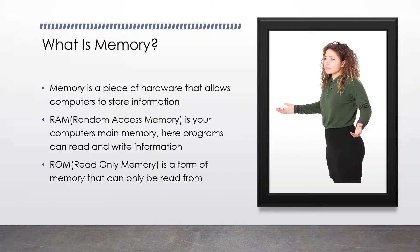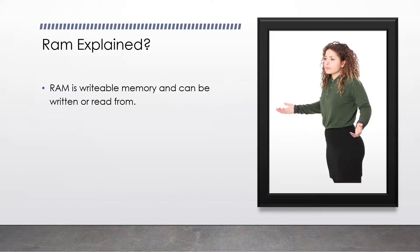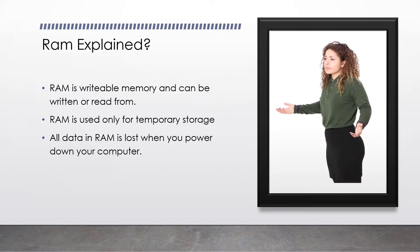We will now discuss the differences between the two. RAM is a writable memory and can be written or read from. RAM is only used for temporary storage, and all data in RAM is lost when you power down your computer.